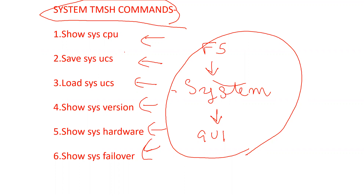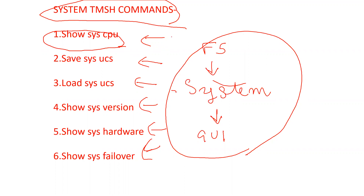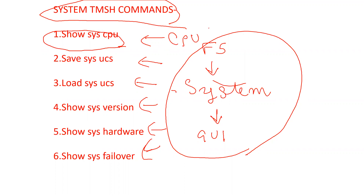First, how to check system utilization. When you go to the CLI, I will show you practically how to run this command. The command `show sys cpu` will help you check CPU utilization for your device — it checks all CPU utilization. In any case, if someone reports device slowness or you are not able to ping properly, you need to run this command, check the CPU utilization for the current device, and troubleshoot accordingly.